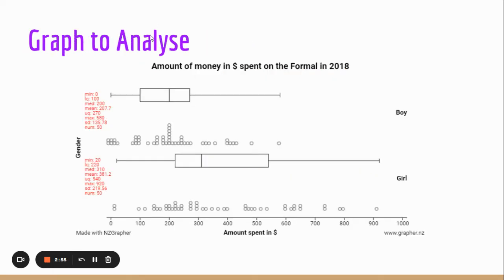The next thing we want to look at is the spread. We always tend to look at the middle 50 percent because that's not affected by the values sticking out at the ends. The middle 50 tells us a good story about the variation in the data.